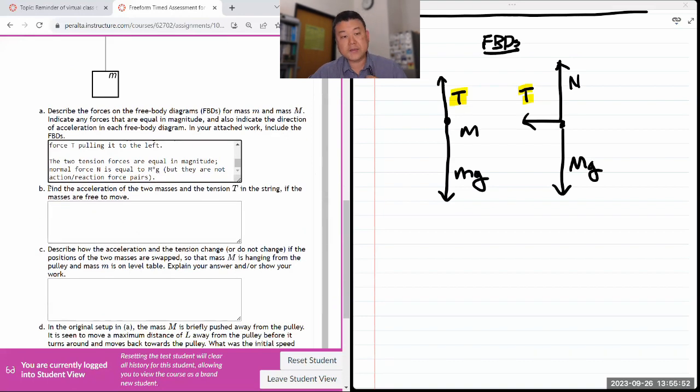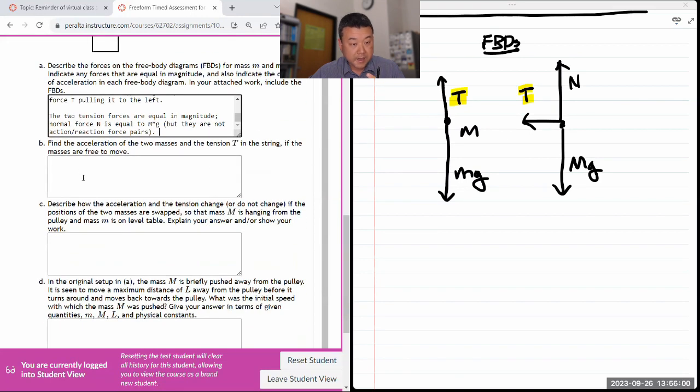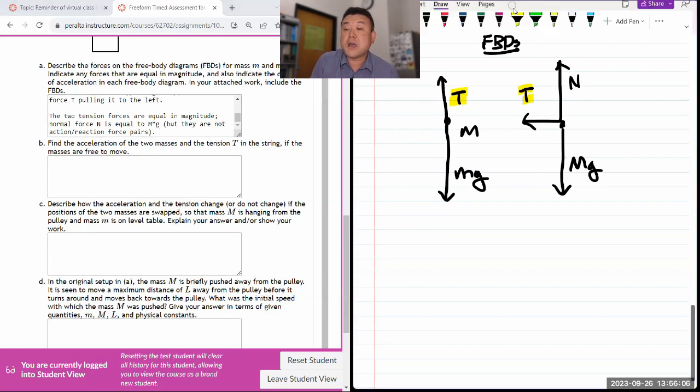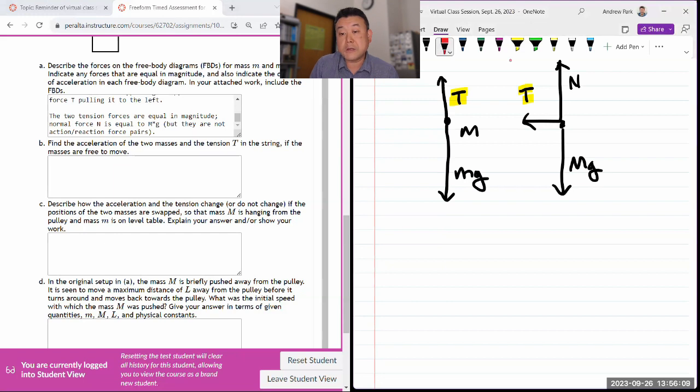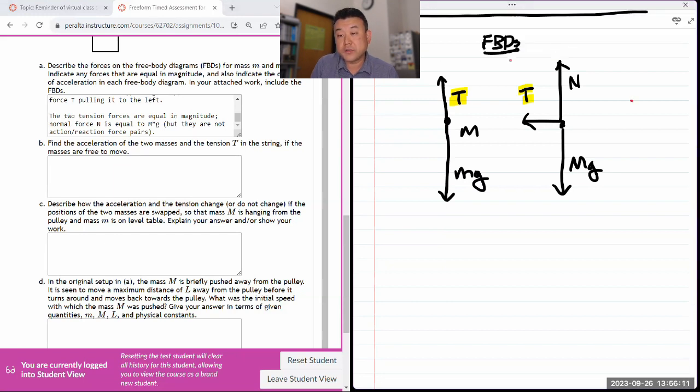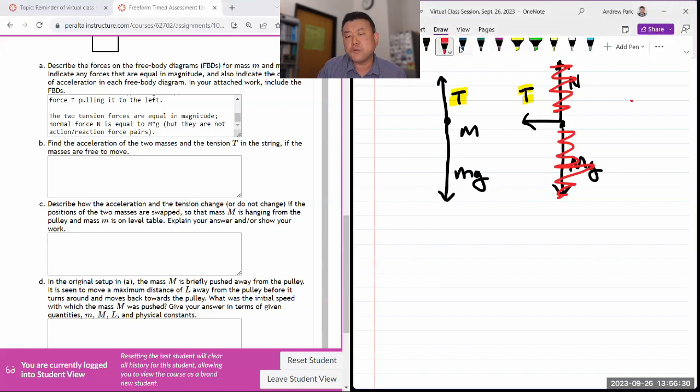I will also say that the normal force N is equal to Mg. But they are not action-reaction force pairs. In fact, I don't think there's really action-reaction force pair. These tensions, they kind of loop around the pulley. If we are looking at the force on the pulley by the string, then there's a reaction pair that we can consider. But here, no. It asks, find the acceleration of the two masses and the tension T in the string if the masses are free to move. And let me see. And we are never going to deal with the friction force. So let me make this a simplification.